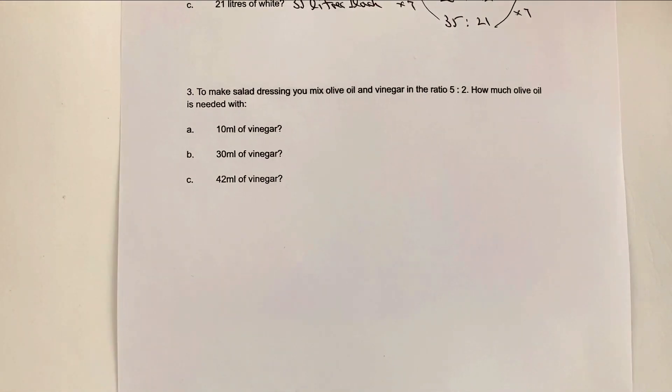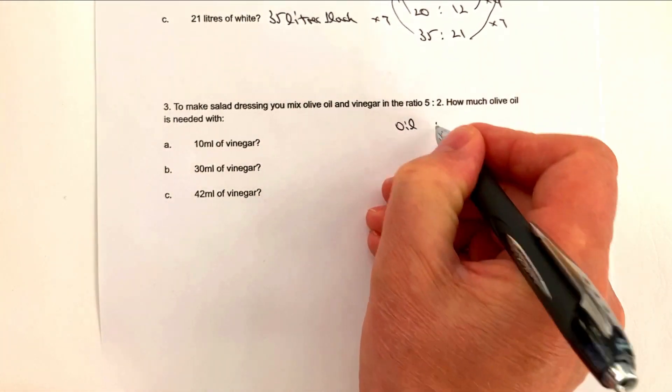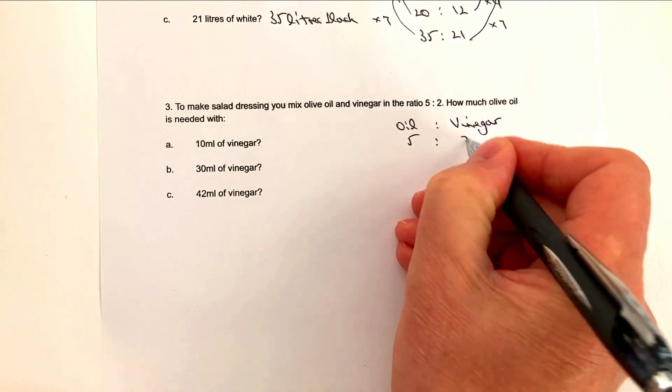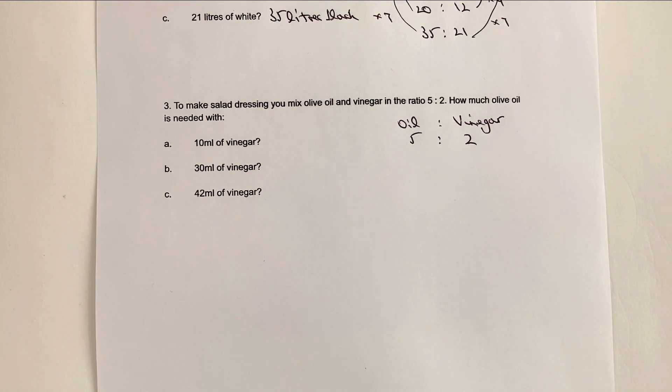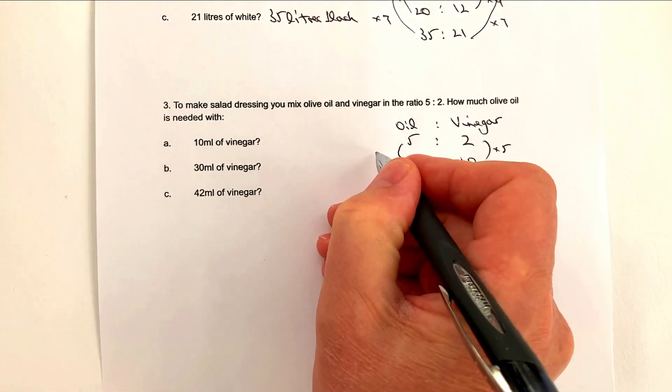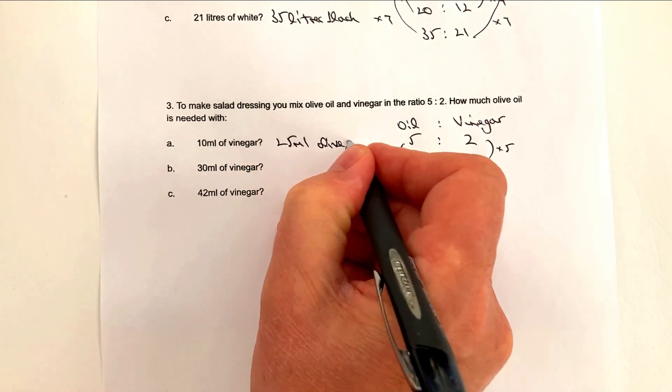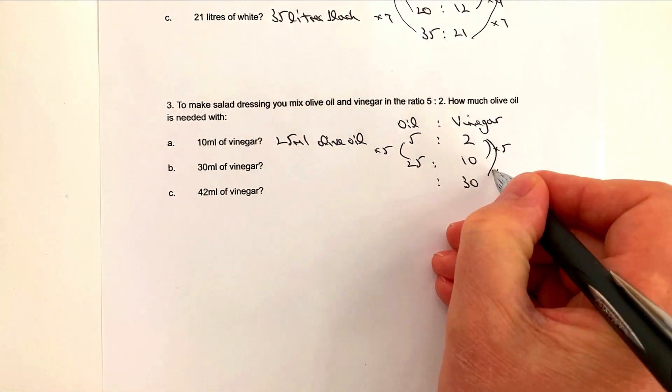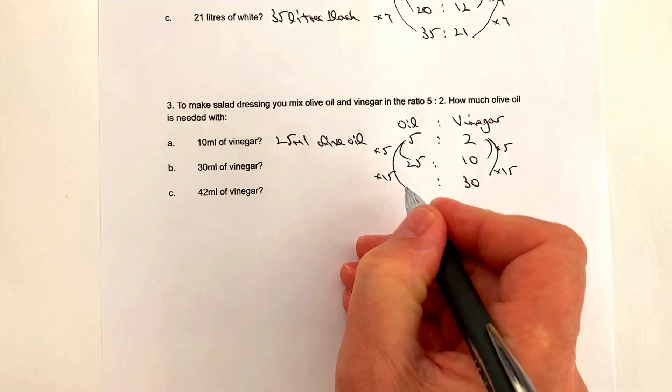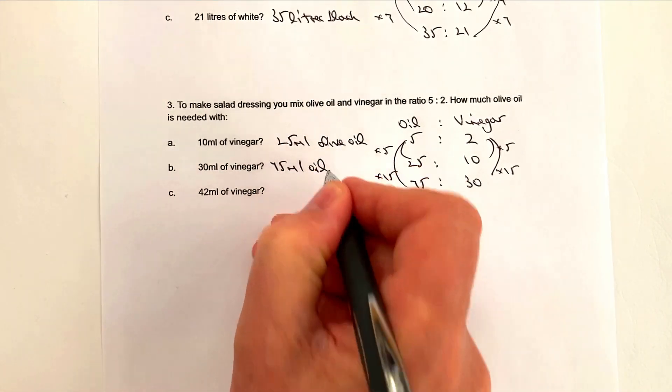Let's move on to a very similar question where we're making, in this particular case, salad dressing. Now, I'm going to use exactly the same principle. I've got oil, and I've got vinegar, and it's in the ratio of 5 to 2. 5 to 2 millilitres of oil and vinegar. So in this particular case now, I'm using 10 millilitres of vinegar. So if I make that 10, I've multiplied that by 5. I'm going to multiply the other side by 5, and that's going to give me 25. So that would be 25 millilitres of olive oil. Next one then is if I've got 30 millilitres of vinegar, so that's going to be 30. I've multiplied that by 15, so I multiply that by 15. So 5 times 15 is going to be 75. So that would be 75 millilitres of oil.